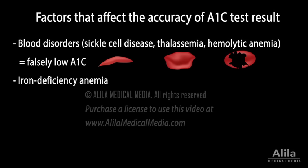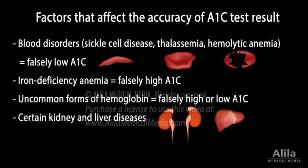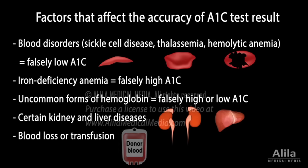Iron deficiency anemia, on the other hand, is associated with falsely high A1c measurements. Some people of African, Mediterranean, or Southeast Asian descent may have uncommon forms of hemoglobin that produce falsely high or low results. Certain kidney and liver diseases may affect the turnover rate of red blood cells and give rise to inaccurate A1c readings. Finally, recent blood loss or transfusion will also skew the test results.